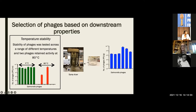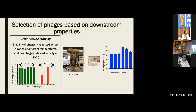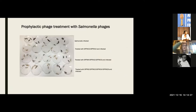Luckily, that stability translated to being able to dry the phages more stably. We dried the phages into a powder within sugars and other excipients. The two heat-stable phages showed the highest retention of activity after spray drying, so these are the two phages we decided to use in our animal trials.